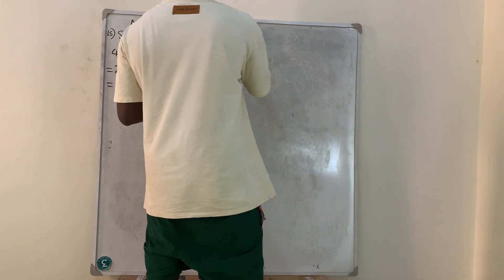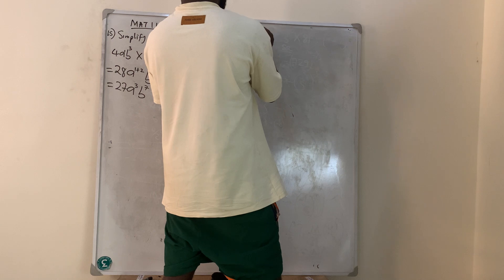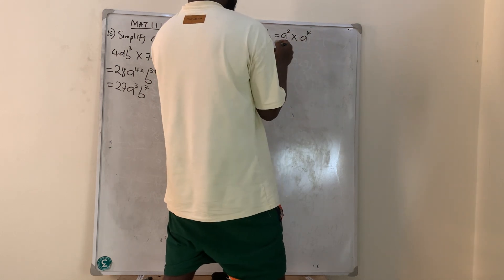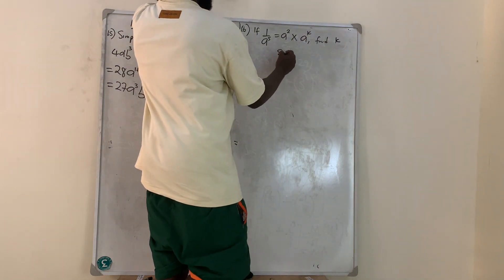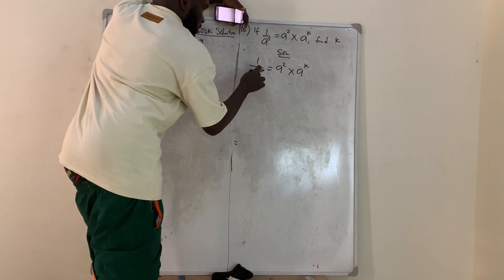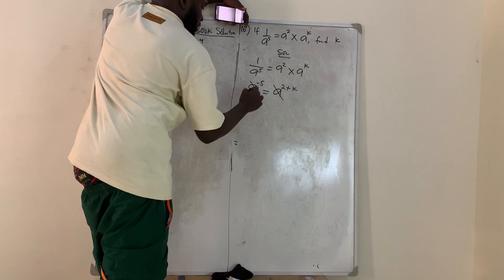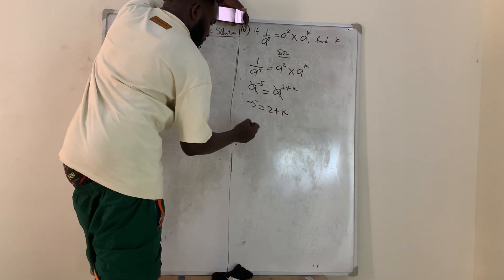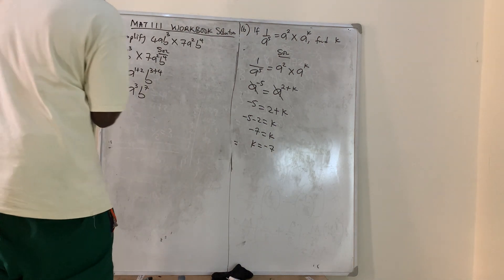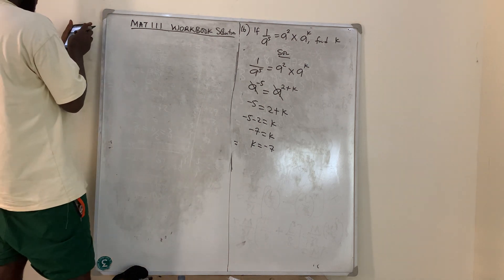Question number 16: if 1/a⁵ = a² × aᵏ, find k. Rewrite the left side: a^(-5) = a^(2+k). Since bases are equal: -5 = 2 + k, so k = -5 - 2 = -7.